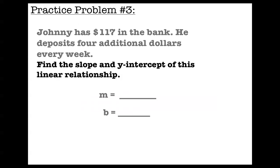And then finally, Johnny has $117 in the bank. He deposits 4 additional dollars every week. For this linear relationship, what would the slope be, and what would the y-intercept be? What would the m be, and what would the b be?